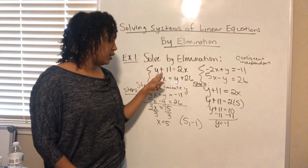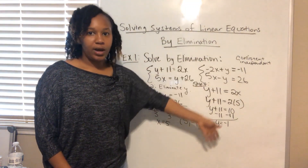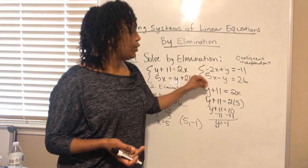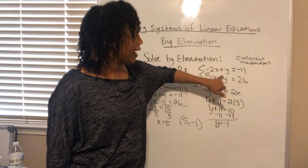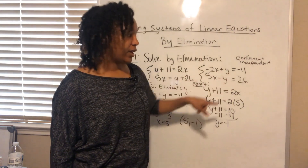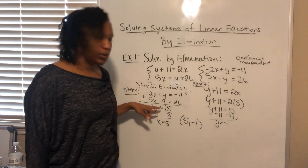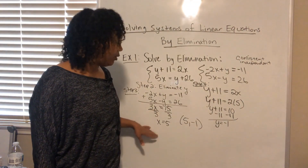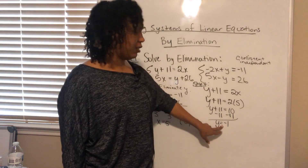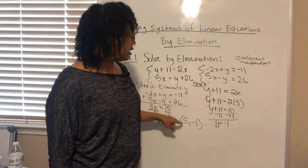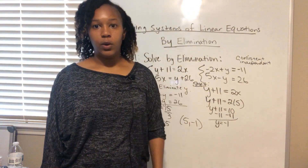Just to recap: step one, we put the x's and y's on the same side in standard form so they line up when we add the equations. Step two, we picked y to eliminate because it already had the same coefficient — one positive, one negative. Step three, we added the two equations together and solved for the remaining variable. Step four, we plugged that result back into one of the original equations to find the other variable and get our solution. You can always check by plugging both values into the original equations.